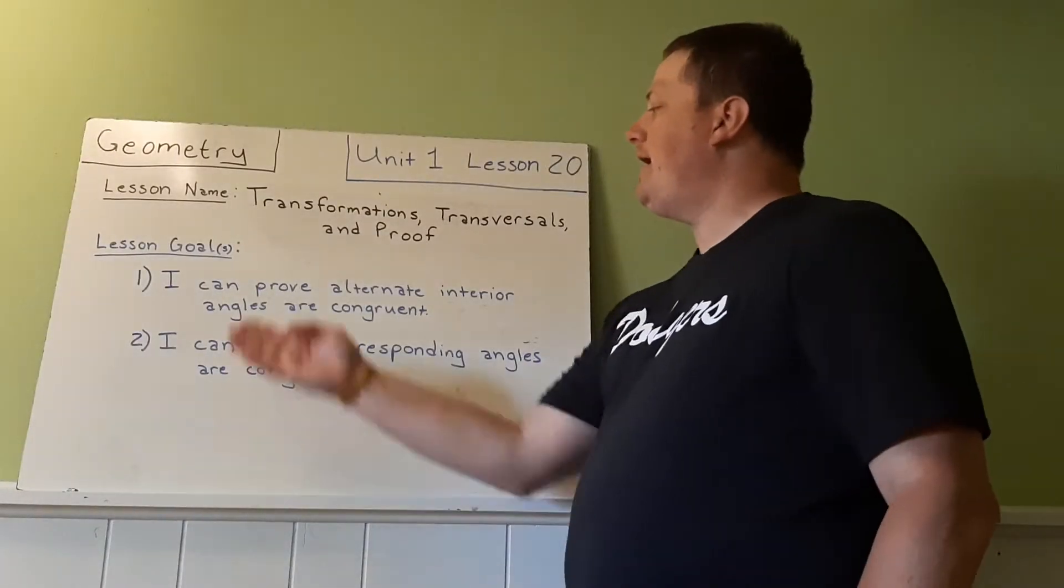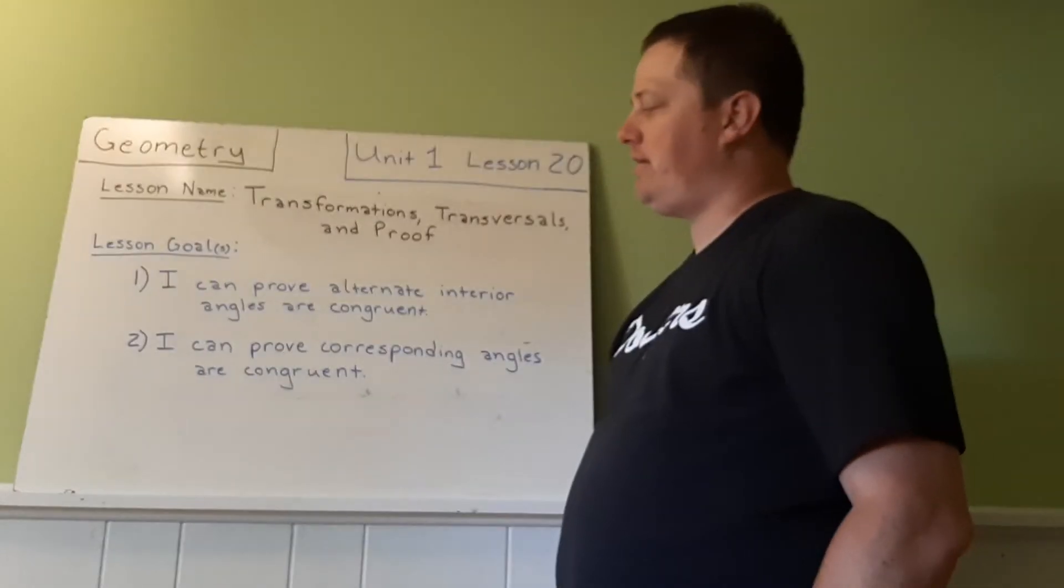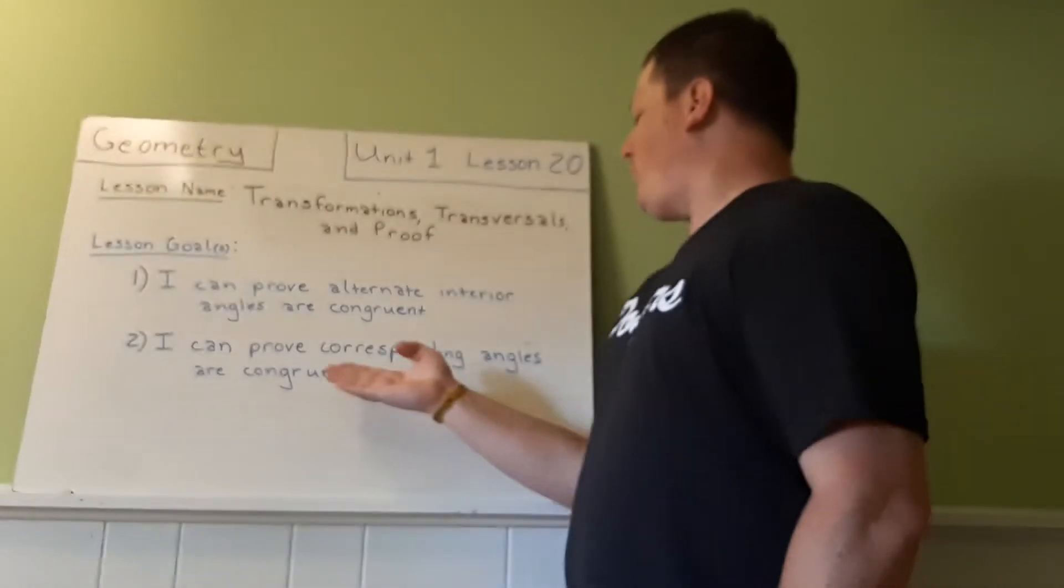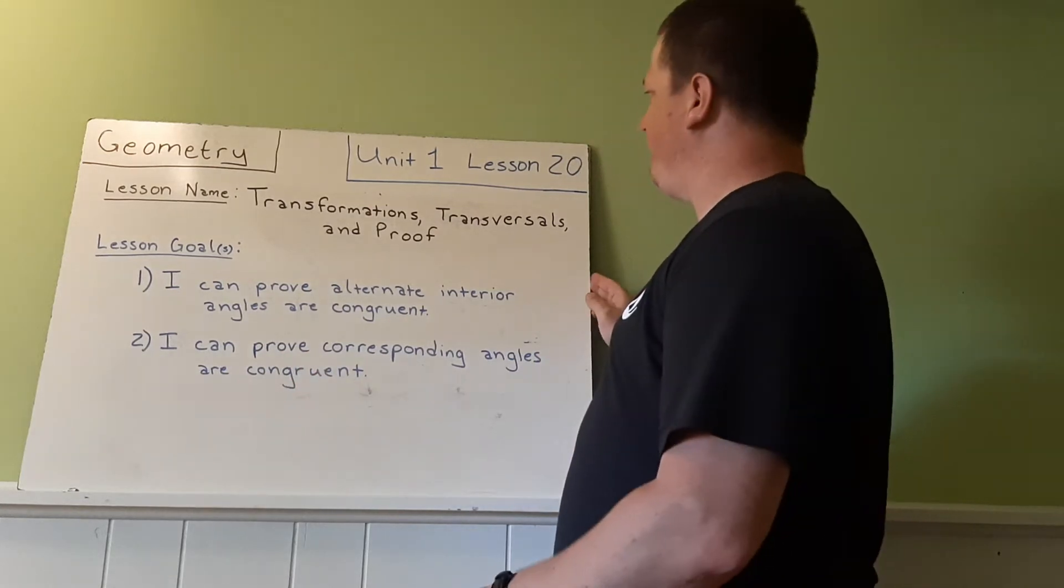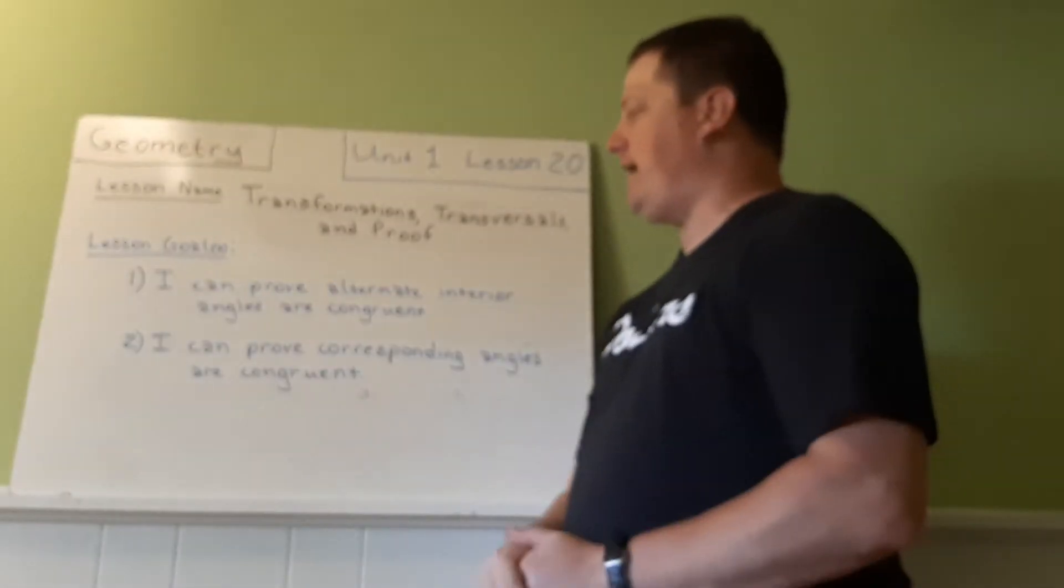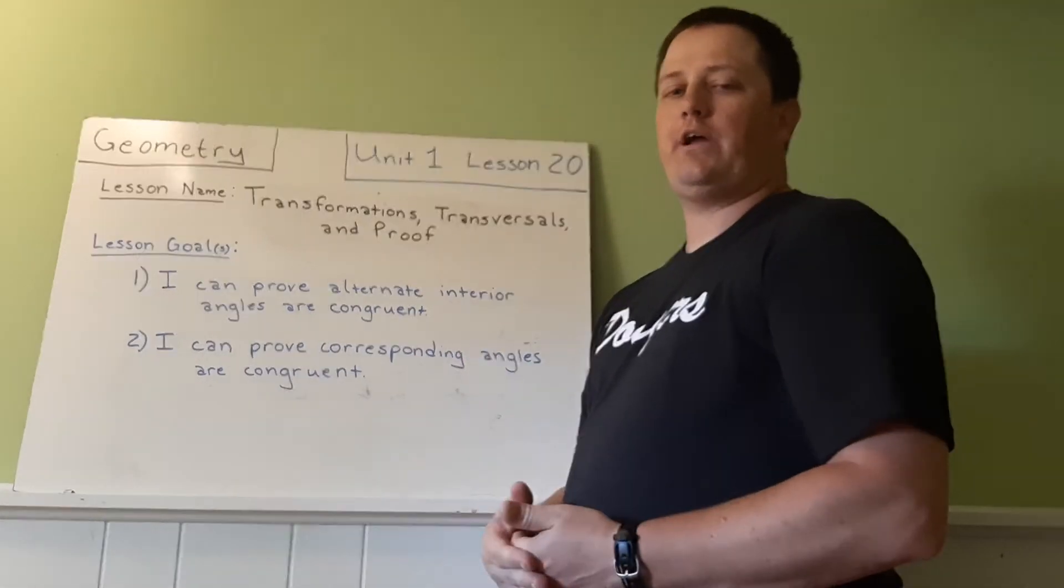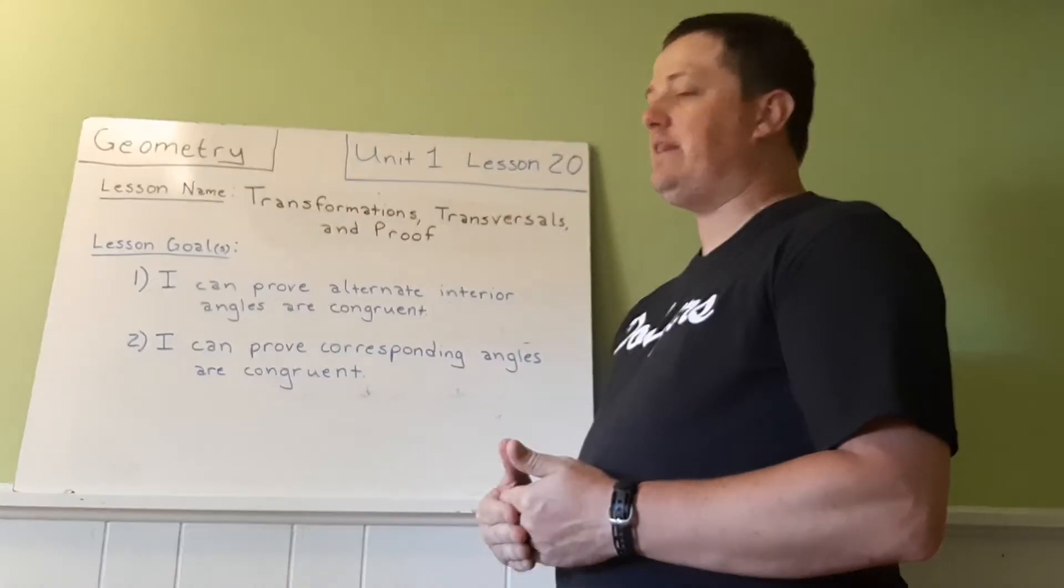Our goals are: I can prove alternate interior angles are congruent, and I can prove corresponding angles are congruent. So in this one, we're going to learn what an alternate interior angle is and what corresponding angles are, and then we're going to go about the job of proving them to be equal.